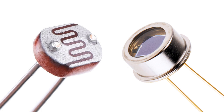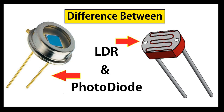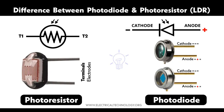Photoconductive mode (reverse bias): The photodiode is reverse biased, meaning an external voltage is applied in the opposite direction of the built-in potential. This widens the depletion region, reducing capacitance and increasing response speed. The photocurrent is linearly proportional to the incident light intensity. This mode is suitable for high-speed applications.